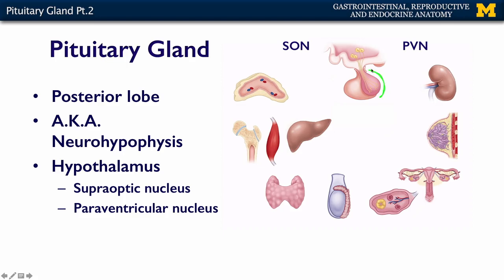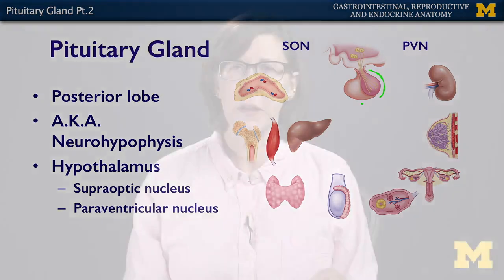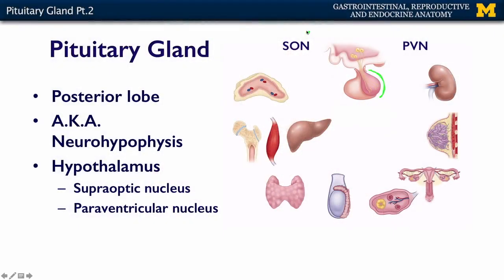The posterior pituitary gland is a direct extension of the hypothalamus and the brain. There are two nuclei within the hypothalamus that secrete their hormones into the posterior pituitary: the supraoptic nucleus (SON) and the paraventricular nucleus (PVN). The supraoptic and paraventricular nuclei secrete their hormones into the posterior pituitary gland.